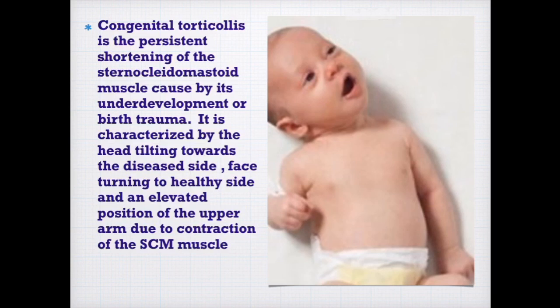It is characterized by head tilting towards the diseased side with the face turning to the healthy side, and an elevated position of the upper arm due to contraction of the sternocleidomastoid muscle. Congenital muscular torticollis ranks third place after hip dislocation and club foot on the list of musculoskeletal system diseases in pediatric hospitals.